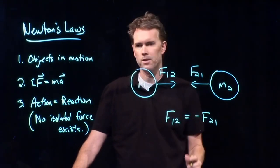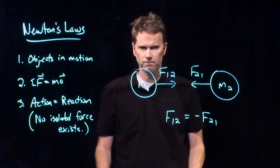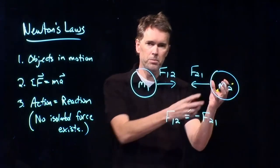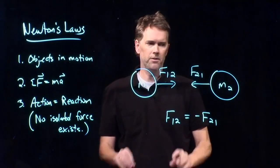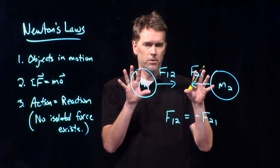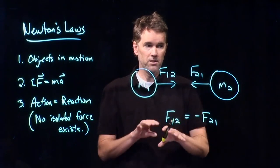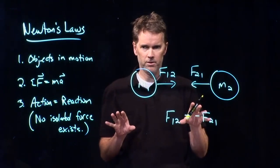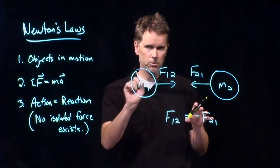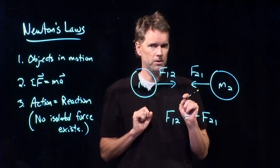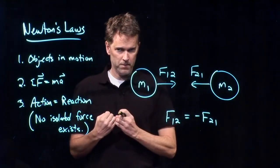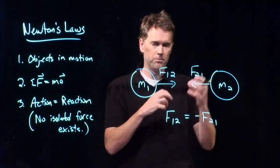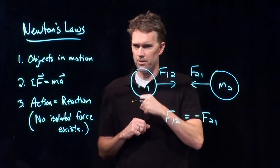Those forces are always going to be equal and opposite, and the minus sign just takes into account the change in direction. Mass one is being pulled by mass two, and mass two is being pulled by mass one. This is what we'll learn later when we think about Newton's universal law of gravitation — it ties the whole universe together. You could be M1, and the earth M2. You're being pulled down by the earth, but you're also pulling up on the earth. The earth pulls on the moon, but the moon pulls on the earth.